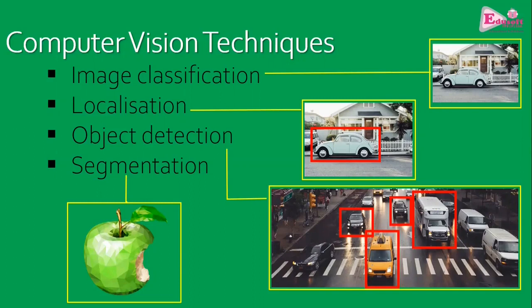Object detection has much more application where videos and live camera feeds are involved. As an object moves, the computer can tell that it has moved from one point to another, stopped, or turned. Object detection also allows counting a particular type of object in an image — for example, how many cars or vehicles are present.